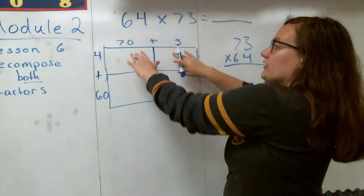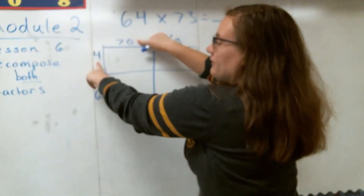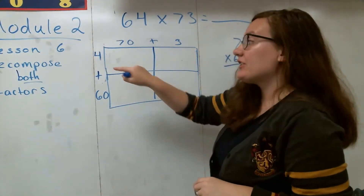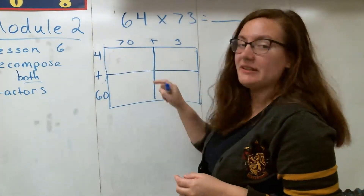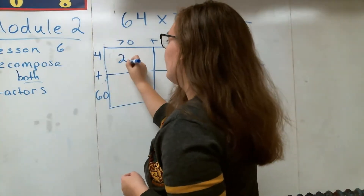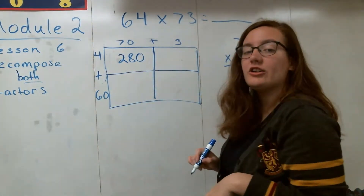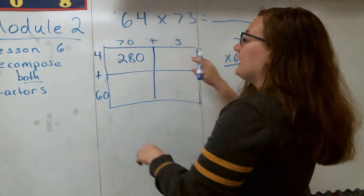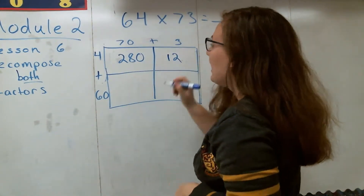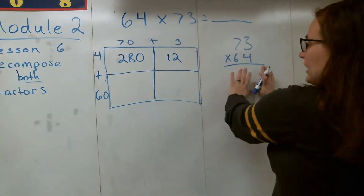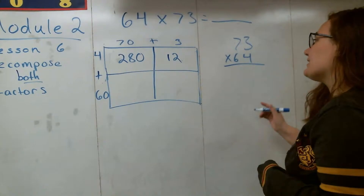Let's go ahead and get started with solving in our area model. I put my fingers on both ends, meet them together, and I start with 4 times 70. I can think of 4 times 70 as 4 times 7, which is 28. Remember, I also have that zero, so I need to add that along, and I get 280. Then over here, we do 4 times 3, which gives me 12. I'm going to show you why these two numbers are going to be really important.